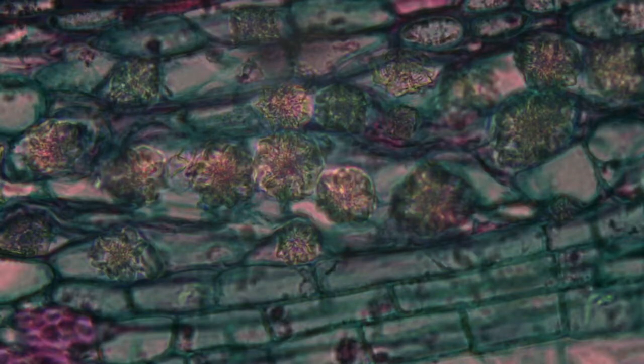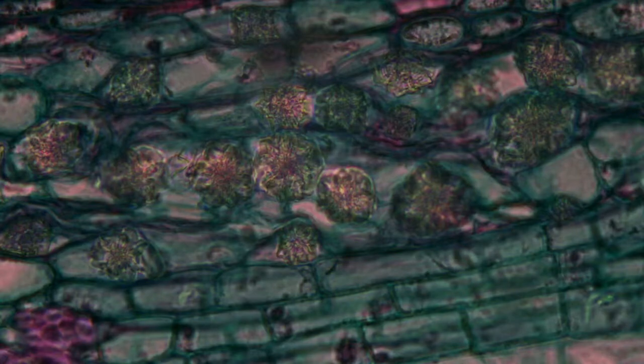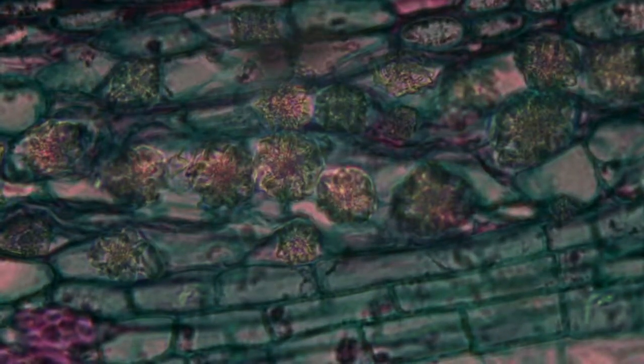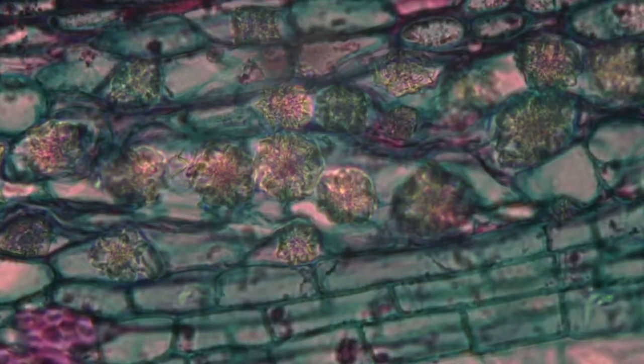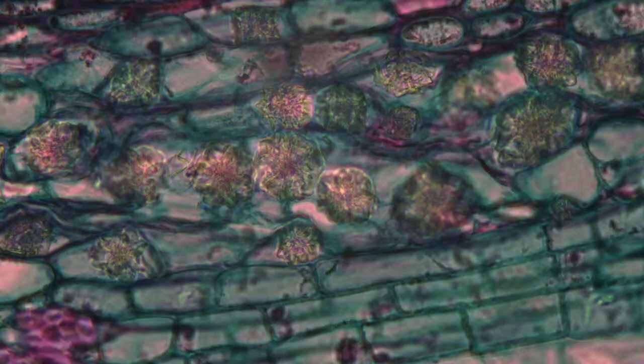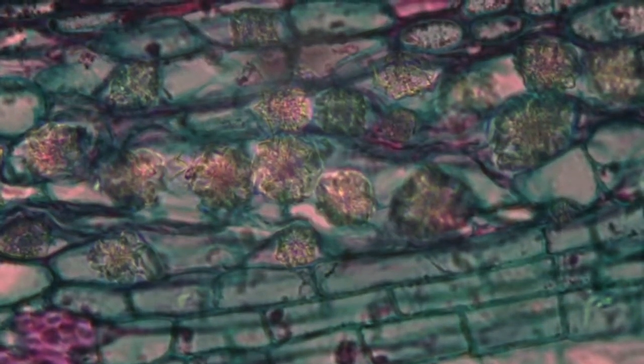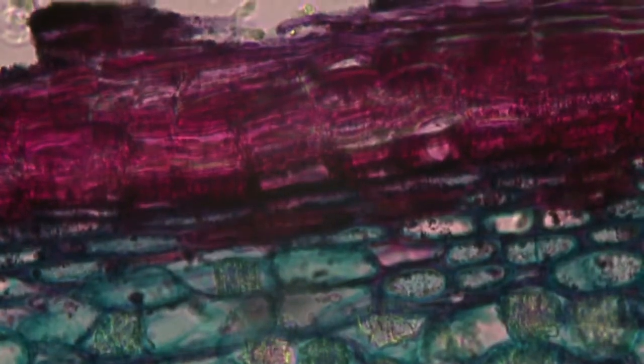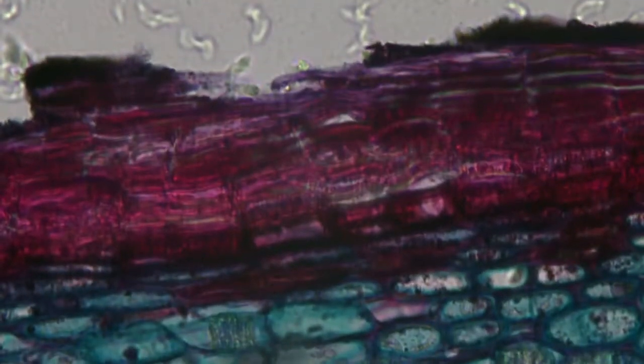So you can see the different cellular structure. Again, you can change contrast with the iris diaphragm near the light source. There's also a diaphragm control up here by the condenser. It's just a spectacular view. This is obviously a stained sample - they use a couple of different stains for doing that. The stains show the morphology of the cellular structure. Really fascinating.